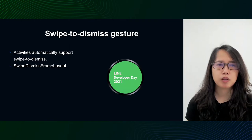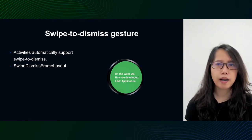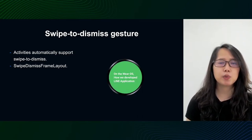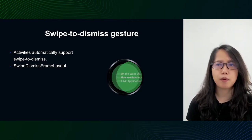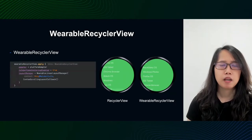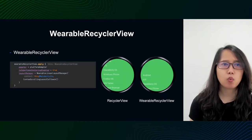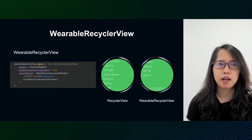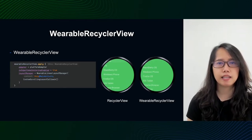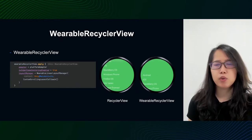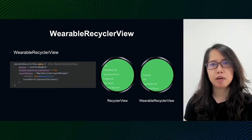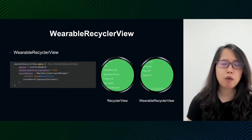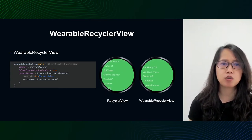By default, the activity automatically supports the swipe-to-dismiss gesture. But for fragment views, we can use SwipeDismissFrameLayout to enable left-to-right swipe. The last component I want to talk about is WearableRecyclerView. It is a wearable-specific implementation of RecyclerView, supporting circular scrolling and a curved layout. If we use a standard RecyclerView, it works fine on a square screen but not on a circular screen — the first and last items will be cut off. Finding a workaround takes too much effort to calculate spacing, so WearableRecyclerView is the better solution.